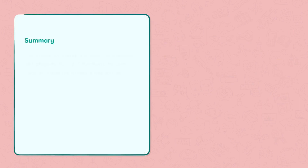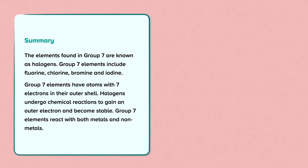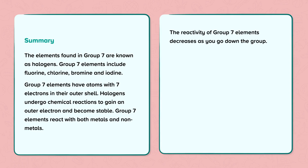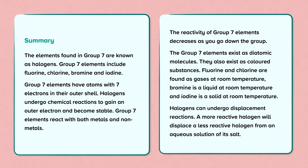To summarize: the elements found in Group 7 are known as halogens and include fluorine, chlorine, bromine and iodine. They have atoms with 7 electrons in their outer shell and undergo chemical reactions to gain an outer electron and become stable. Group 7 elements react with both metals and nonmetals, exist as diatomic coloured molecules, and can undergo displacement reactions where a more reactive halogen displaces a less reactive one from an aqueous solution of its salt.